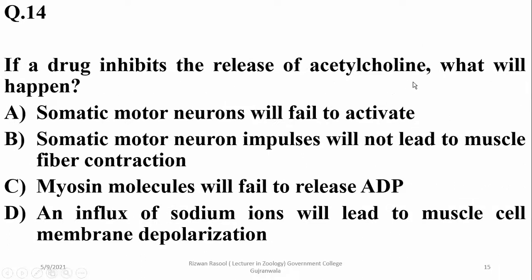If a drug inhibits the release of acetylcholine, acetylcholine is required for stimulation of the sarcolemma, so somatic motor neuron impulses will not lead to muscle fiber contraction because there will be no stimulus at the sarcolemma.